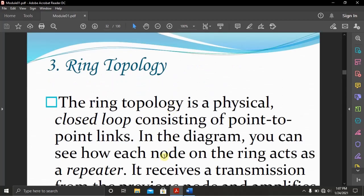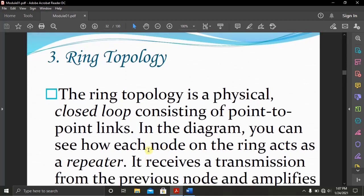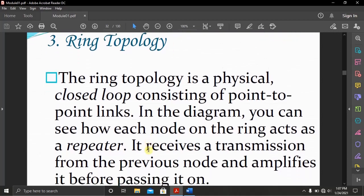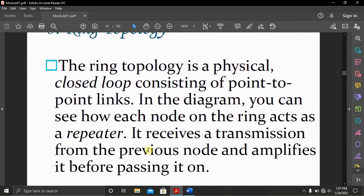The next thing we are going to look at is ring topology. The ring topology is a physical closed loop consisting of point-to-point links. In the diagram, you can see how each node on the ring acts as a repeater. It receives a transmission from the previous node and amplifies it before passing it on.